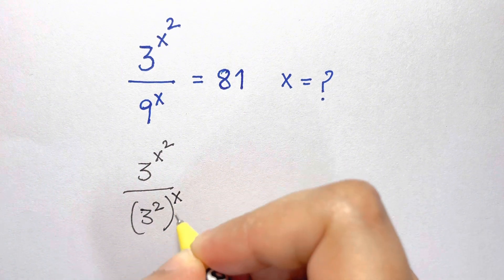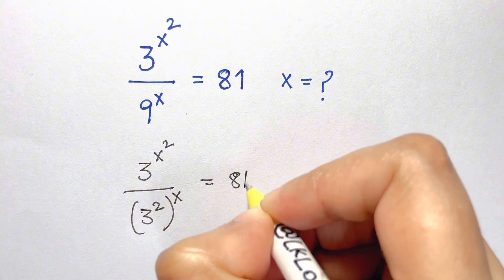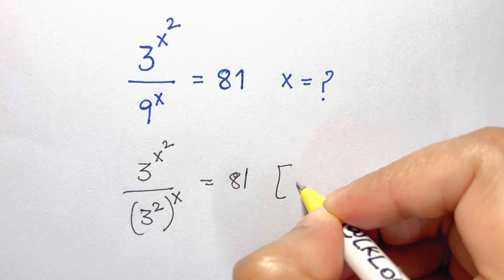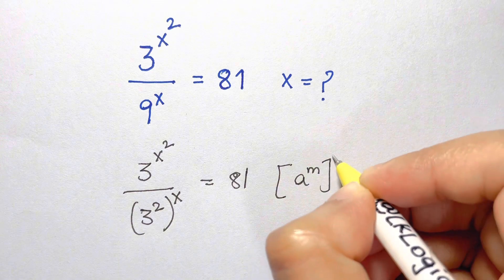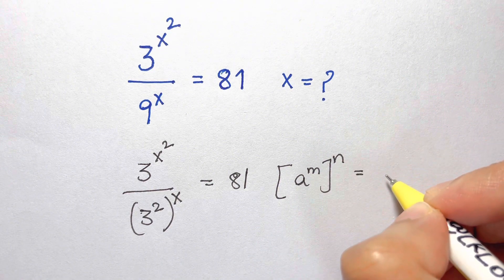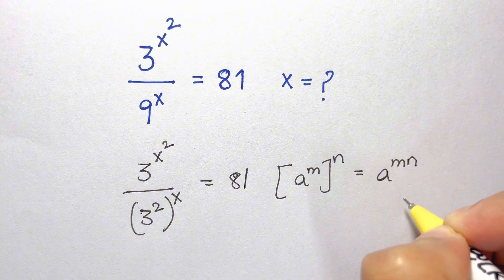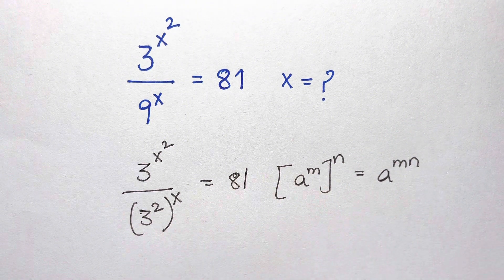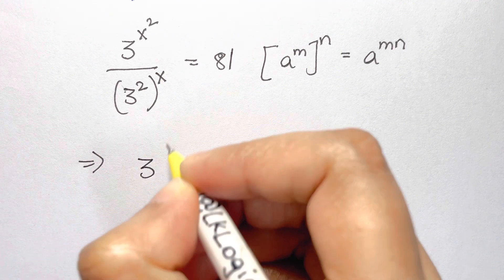Now you should know this law: a to the power of m, whole to the power of n, is equal to a to the power of m×n — when you have power to power, you multiply the powers. So here we're going to multiply the powers.